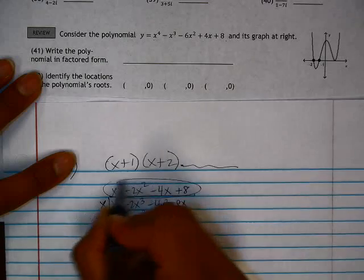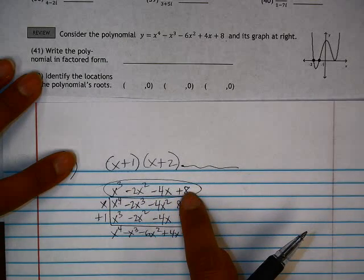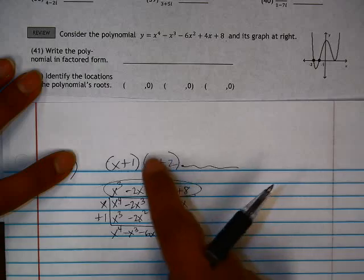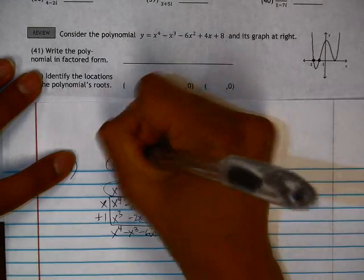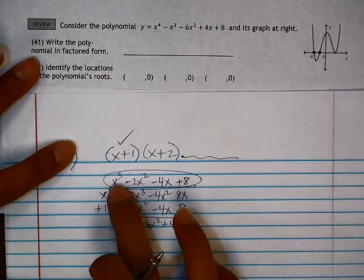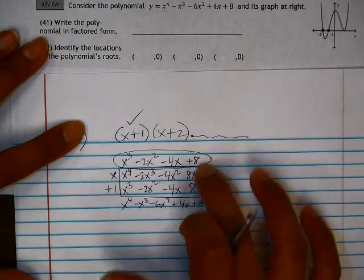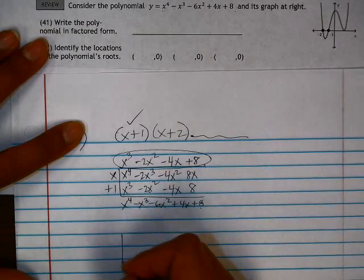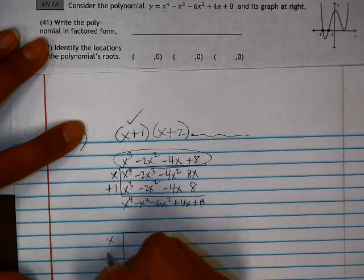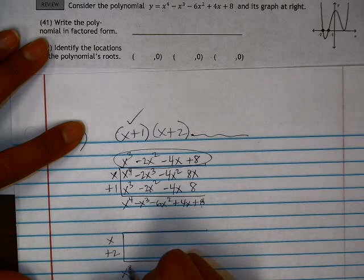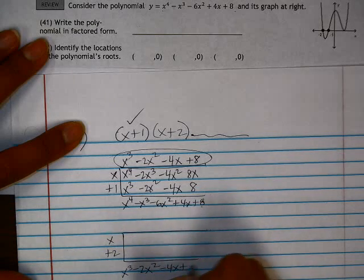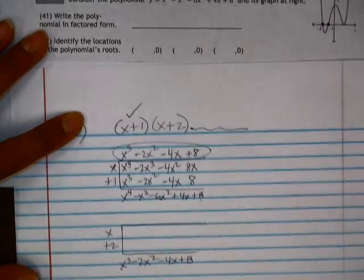Now I have this polynomial. The only way I can factor this is to divide it by the other factor that's given. So we've already divided by x plus 1. Now we're going to take the result and divide that by x plus 2. So I'm going to set up another division problem here. I'm going to divide x cubed minus 2x squared minus 4x plus 8 by x plus 2.